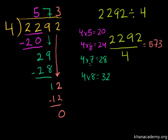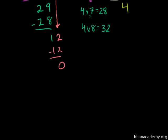Now we have two thousand two hundred and ninety two divided by five hundred and seventy three. Let's look at six thousand four hundred and seventy five.